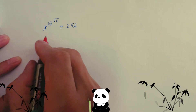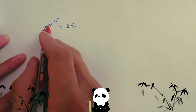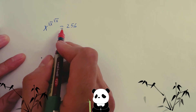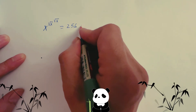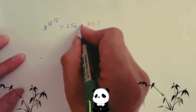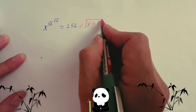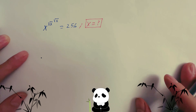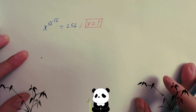Hello guys, today I want to solve an equation like x to the power of square root x, and then to the power of square root x, equals 256. The question is: what value of x? You have to find the value of x. I will show you the solution to sort out this equation.